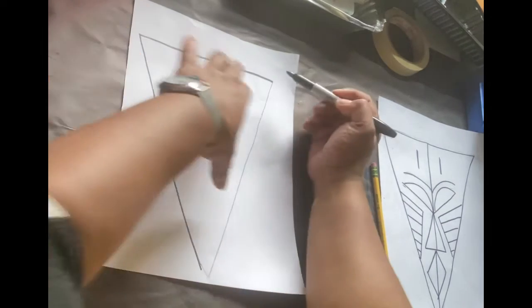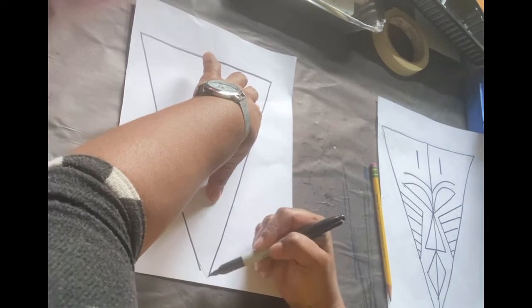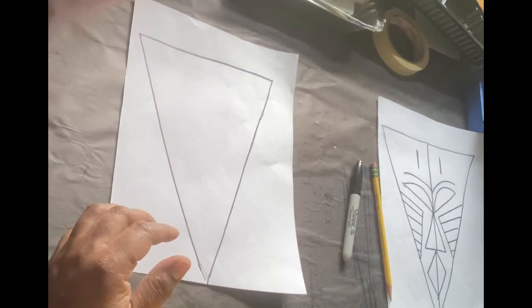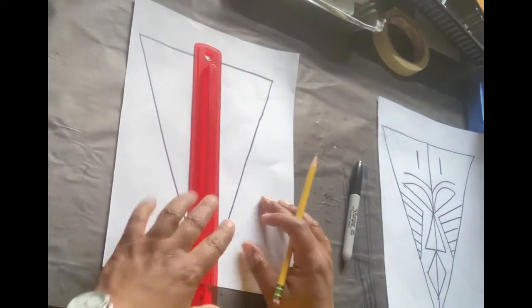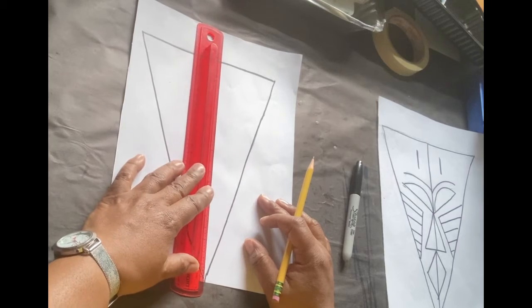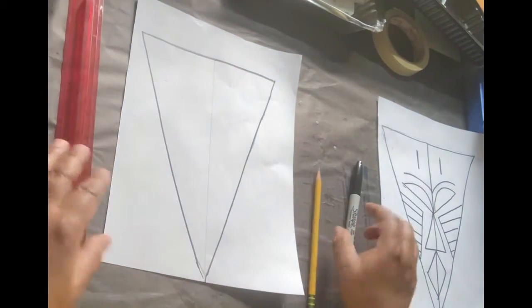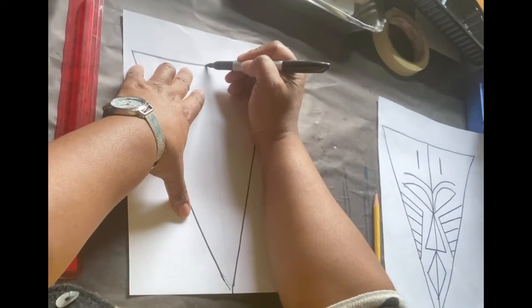I'm going to trace over it with a Sharpie for clarity. So now that I have that done, my next step is I want to create a center line. I'm going to use my ruler to help me do that. So I'm going to come in the middle of my triangle and come down, and that gives me my center line. I'm going to trace that center line.